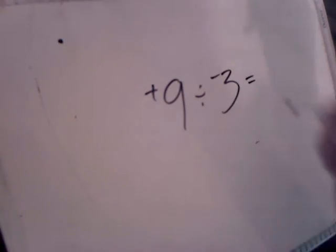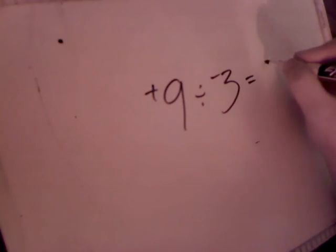Now let's say that we have a division problem. Let's say that we have positive nine divided by negative three. Well, let's do our basic math first. Nine divided by three is three.